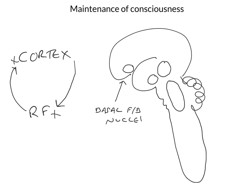One of the inputs to the reticular formation is descending stimulation coming from the cerebral cortex — the cortex itself sends excitatory projections down into the reticular formation. Another input is constant sensory stimulation, which is one of the things that keeps us awake. If we take away sensory stimulation, this is when we start to go to sleep. So here is a sensory neuron that ascends through the cord and synapses in the reticular formation. This neuron also projects to other regions, like the gracile and cuneate nuclei and the thalamus itself, but we're focusing on maintenance of consciousness.